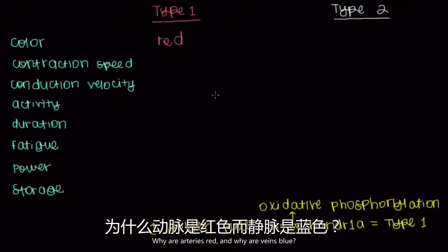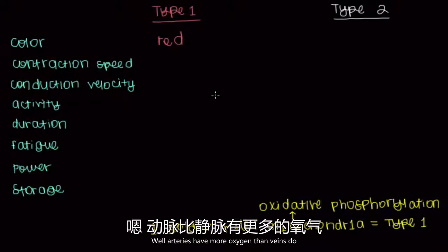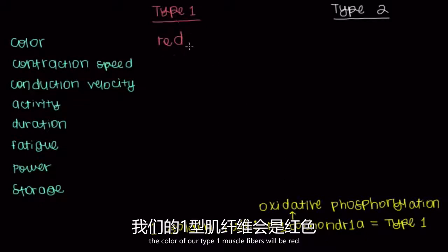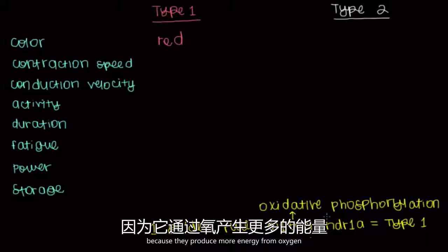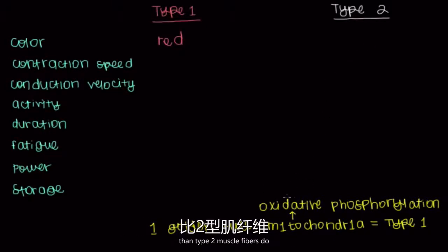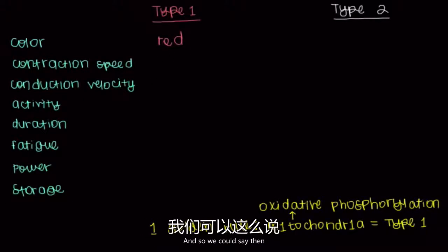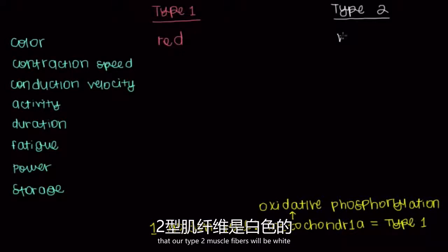Why are arteries red and veins blue? Arteries have more oxygen than veins do. Because of that, the color of our type 1 muscle fibers is red — they produce more energy from oxygen than type 2 muscle fibers do. More oxygen is present in type 1, so they're red. And so type 2 muscle fibers will be white.